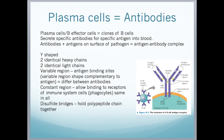Looking at the structure of a B cell antigen receptor: it has a Y-shaped structure with two identical heavy chains, which go through the membrane, and two identical light chains. There is a variable region at the top where the antigen binds — the variable region's shape is complementary to the antigen and will differ between antibodies. There is also a constant region, which allows binding to receptors on immune system cells such as phagocytes, and this constant region is common to all antigen receptors. The disulfide bridge, shown in yellow, holds the polypeptide chains together.